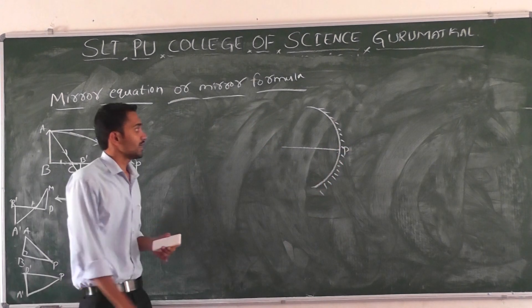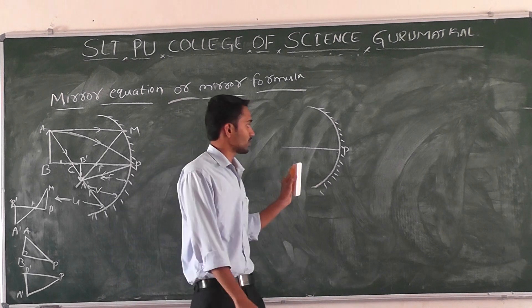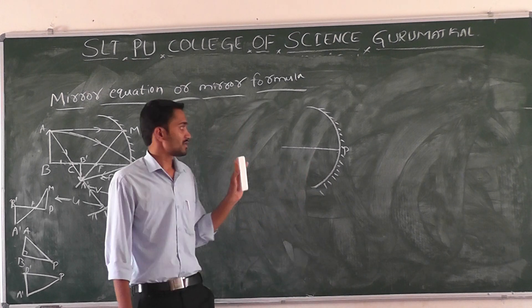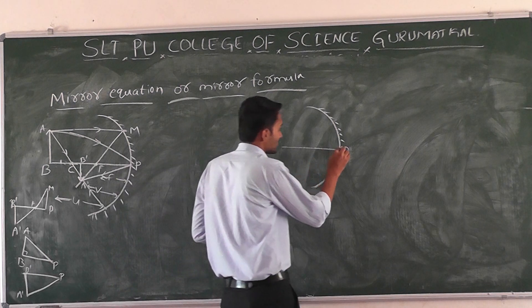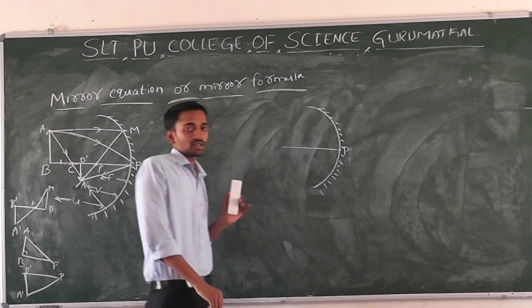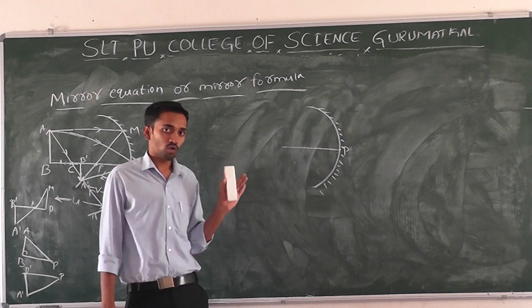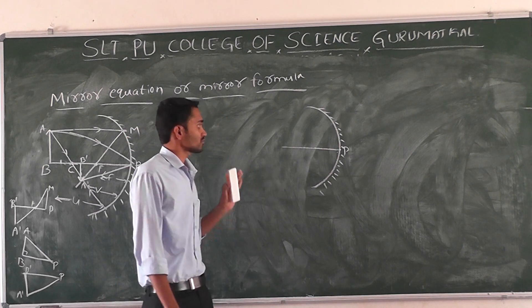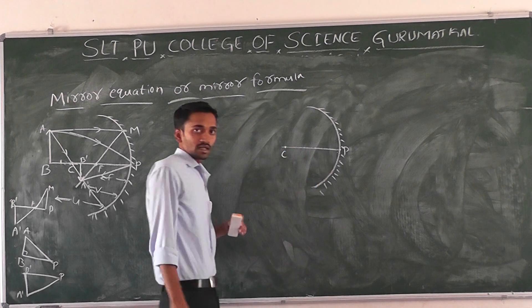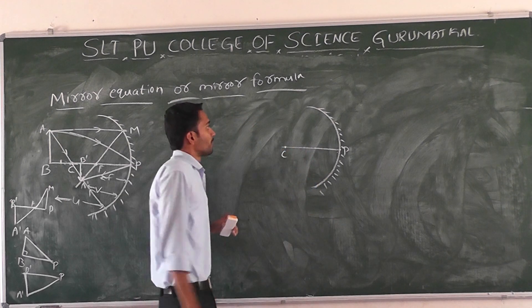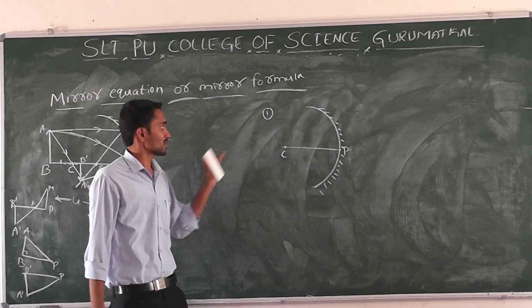First we are taking a concave mirror. As I told in last class, a concave mirror is a converging mirror — when light rays are incident on a concave mirror, all light rays are focused at a particular point and we get an image. Next, C is the center of curvature. There are some note points to remember.